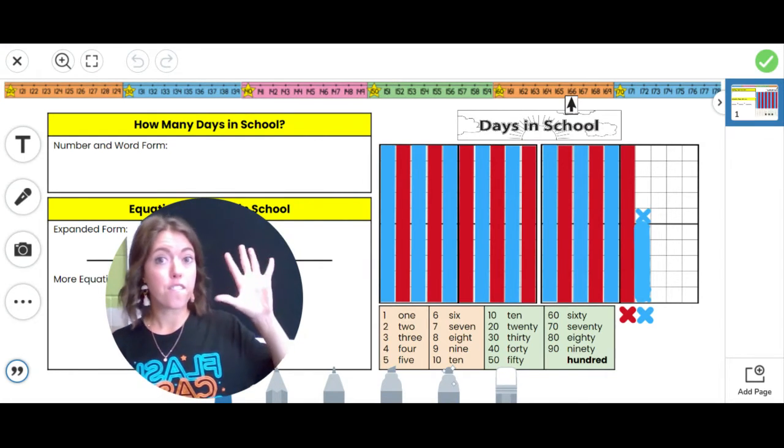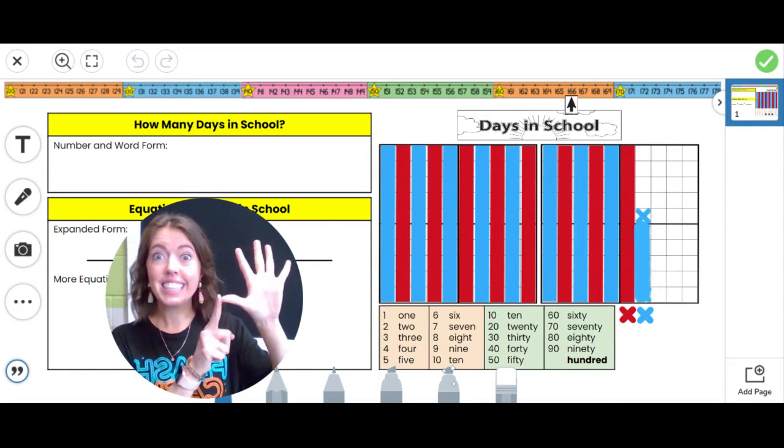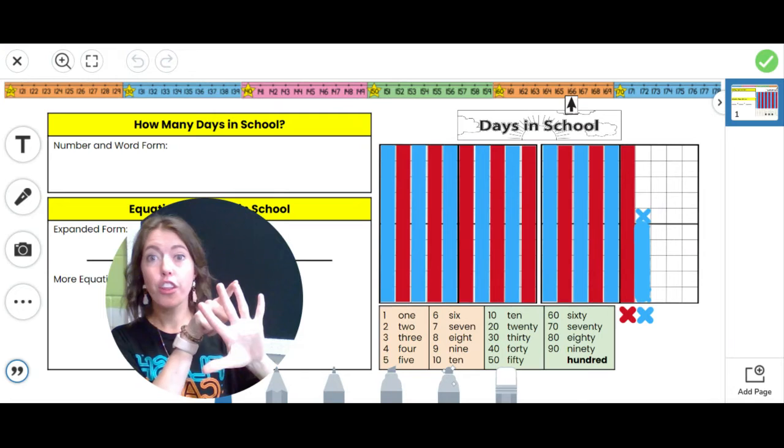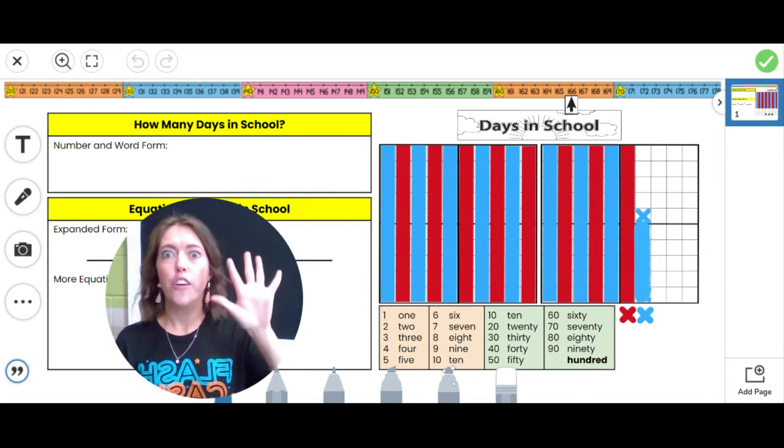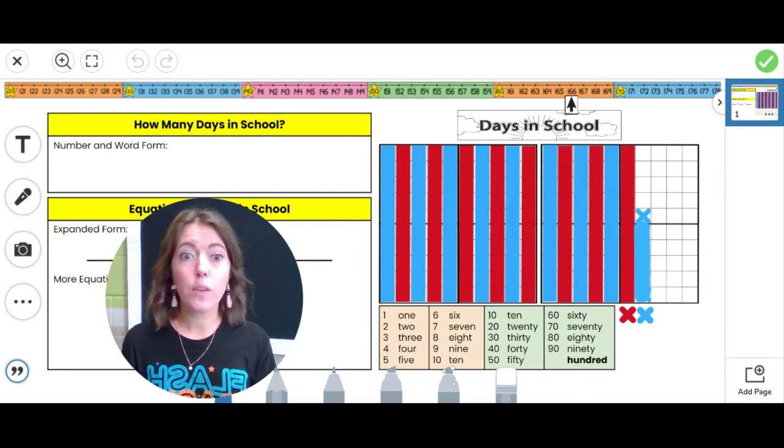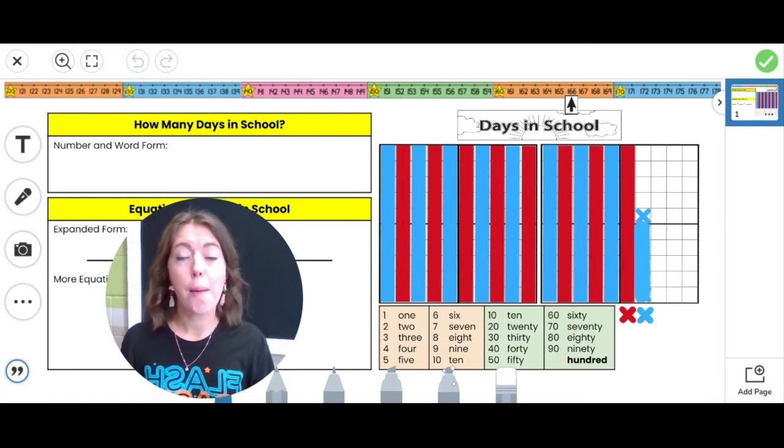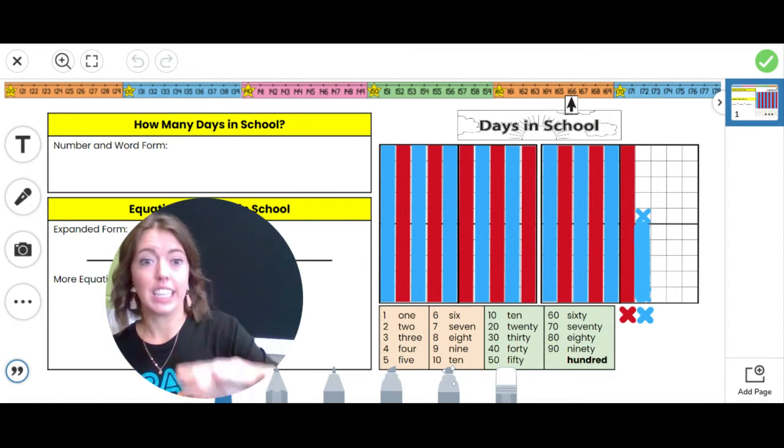This week you have five more days of school. Today is Monday, Tuesday, Wednesday, Thursday, and the last day is Friday. So five more days. So we are going to add five more X's to this chart to find out how many days in school you will have been in first grade all together. Let's add five X's.